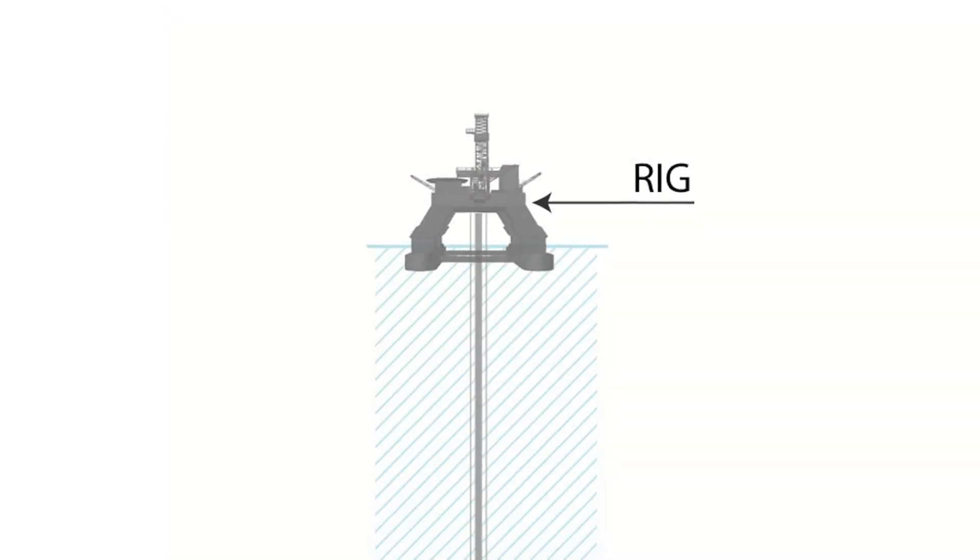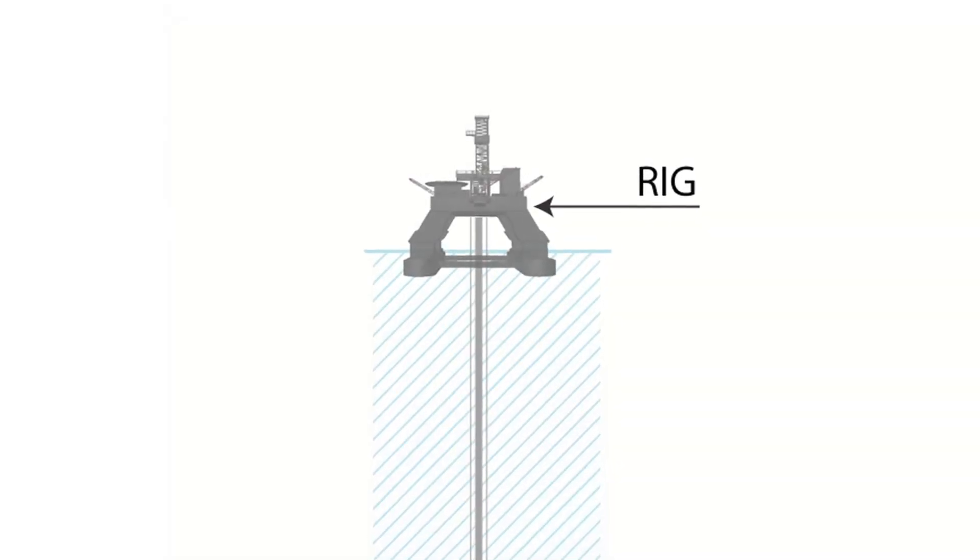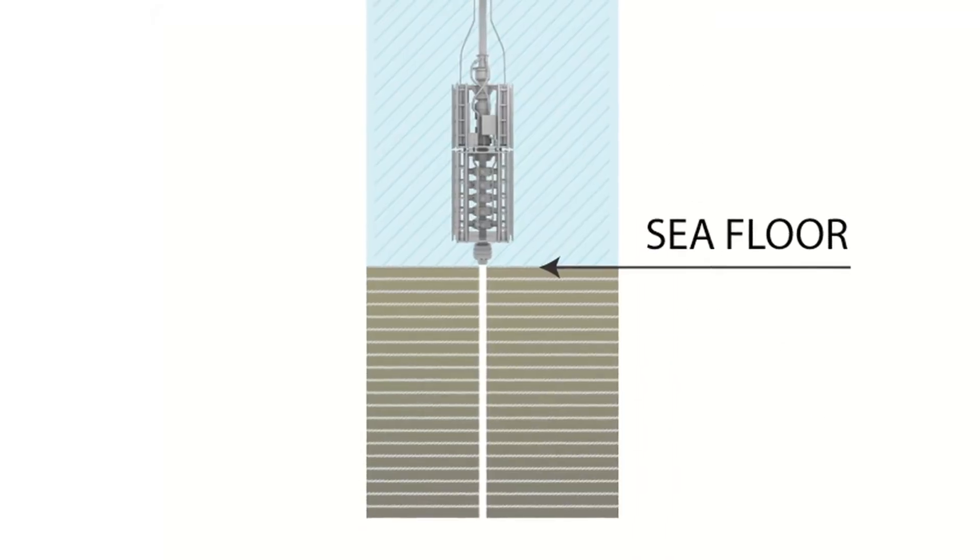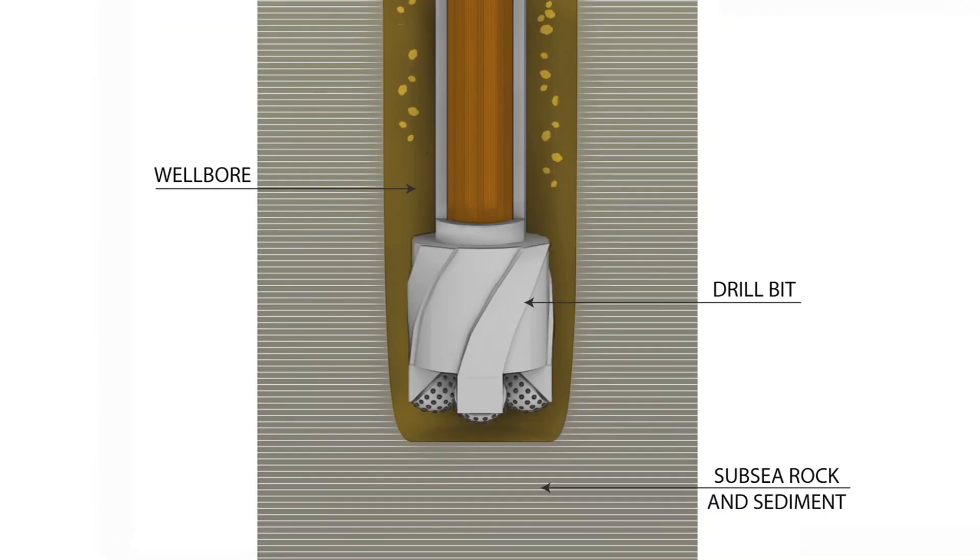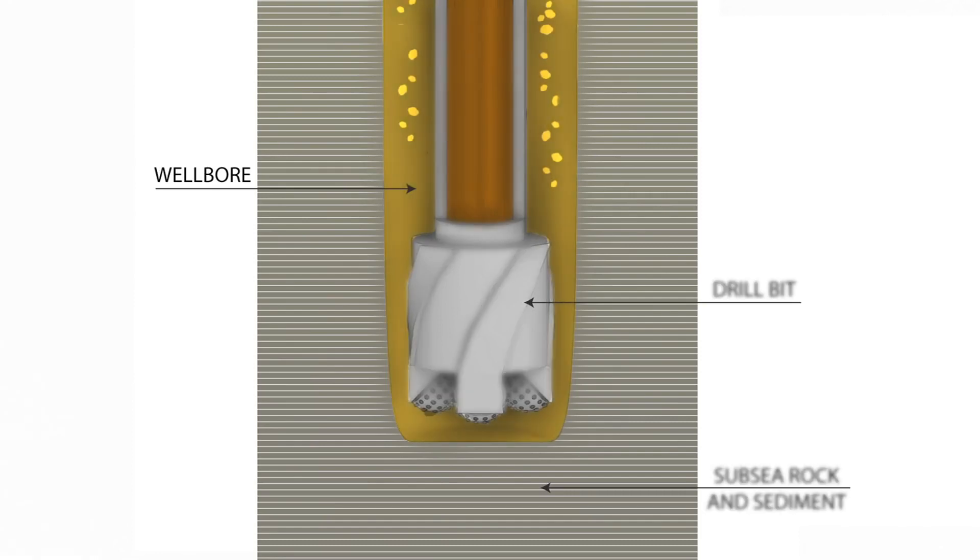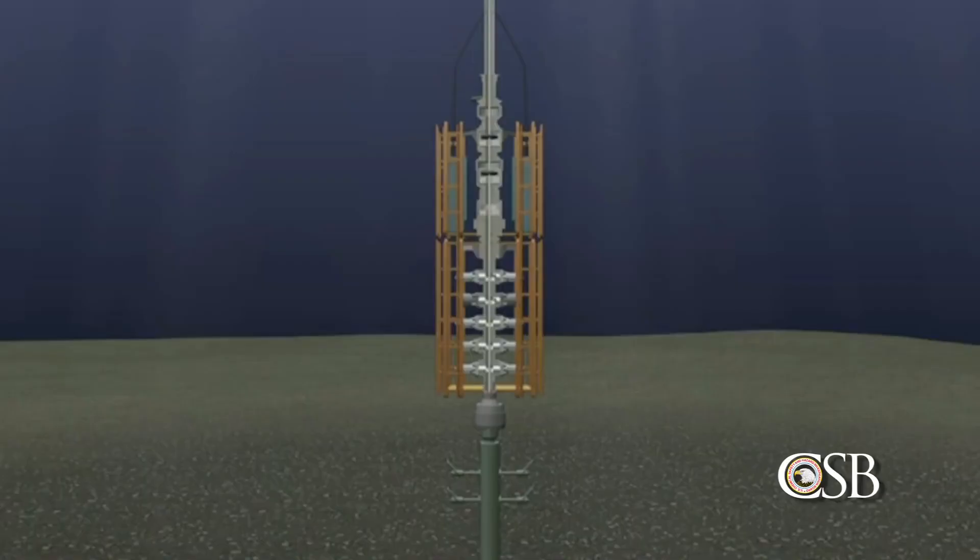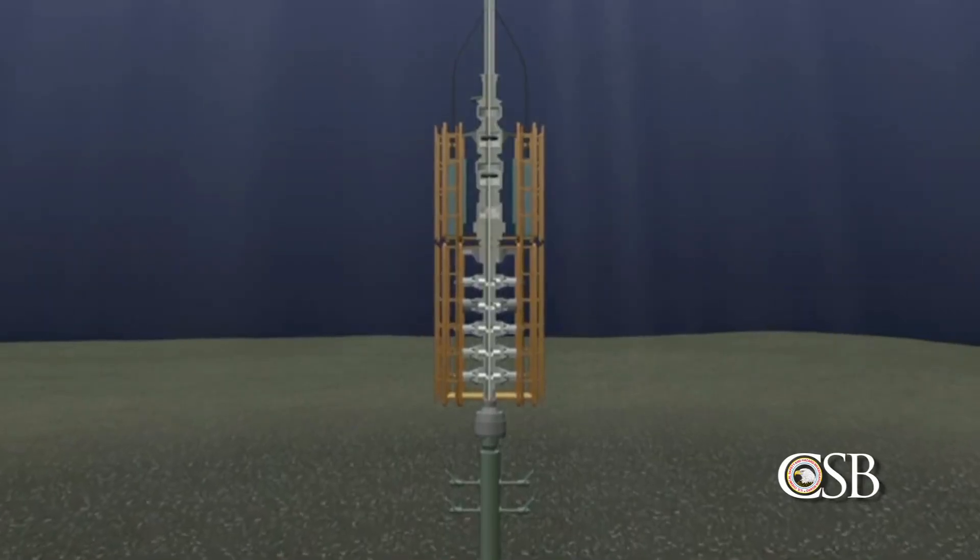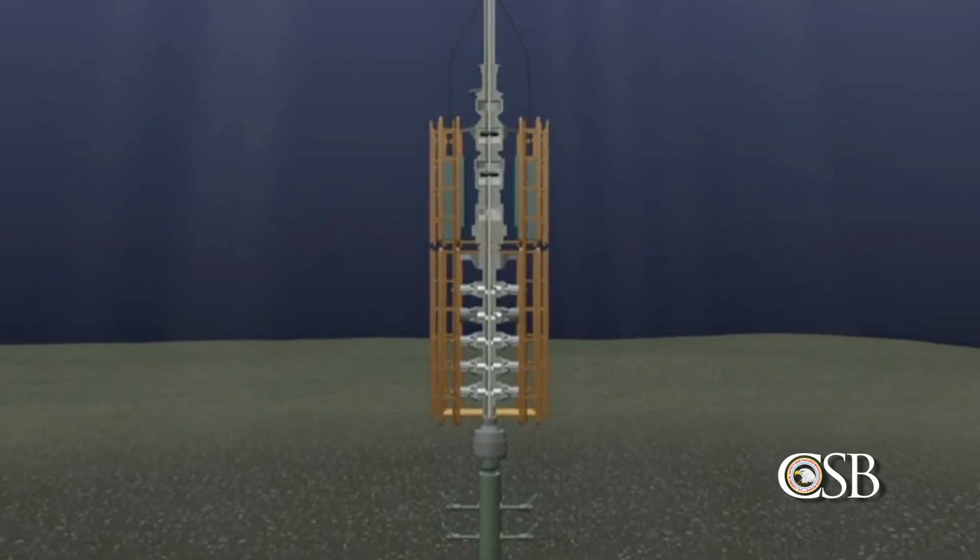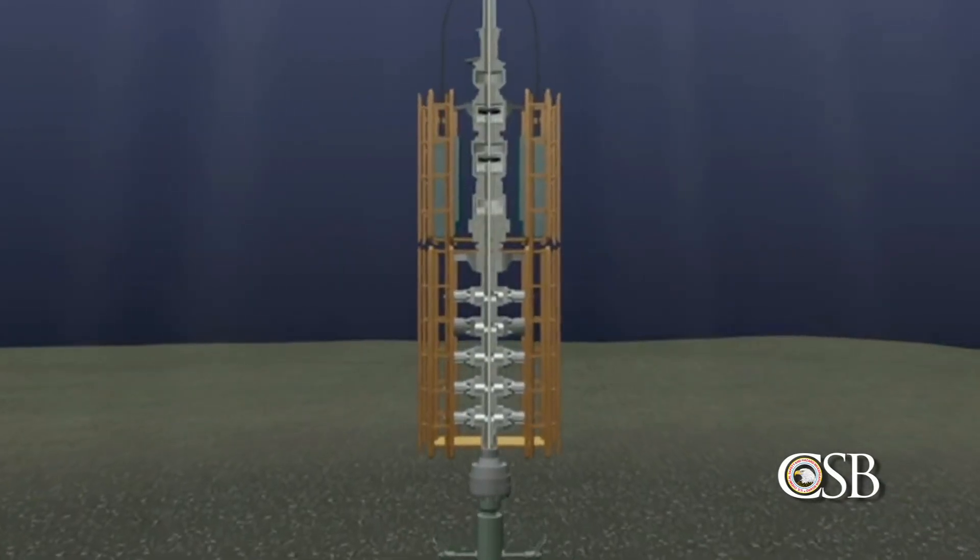Drilling an offshore well involves creating a pathway between the drilling rig and oil and gas reservoirs trapped beneath the sea floor. A deep hole, or wellbore, is drilled through layers of subsea rock and sediment. These rocky layers can contain trapped water, crude oil, and natural gas under pressure. An unplanned flow of these well fluids into the wellbore, known in the industry as a kick, can be dangerous.